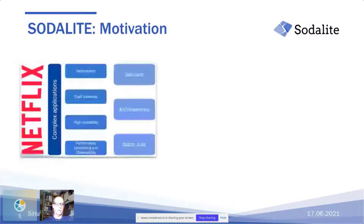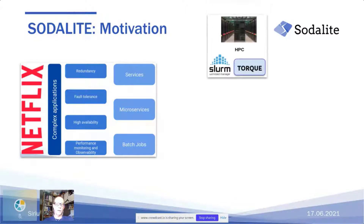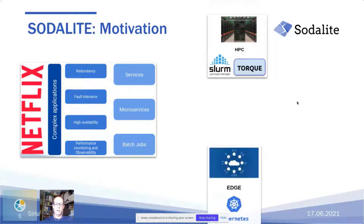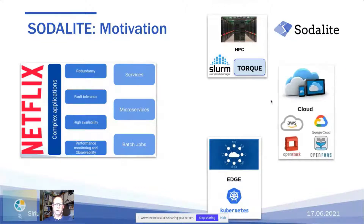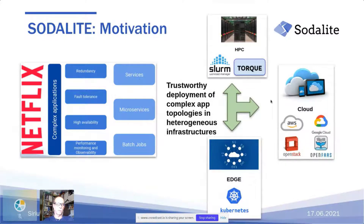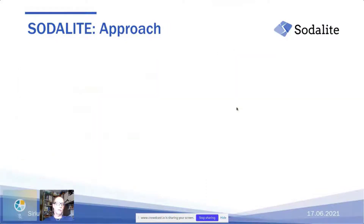SoLight is meant to support the deployment of very complex applications — those consisting of multiple services, microservices, or batch jobs that need to be deployed within heterogeneous infrastructures across multiple platforms including HPC managed by different schedulers, edge, and cloud. The main purpose of the project is to support trustworthy requirements of these complex applications across these heterogeneous infrastructures.